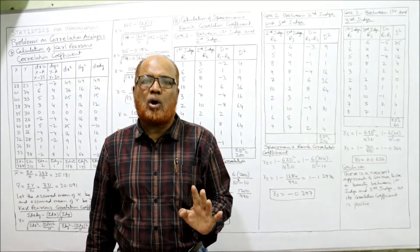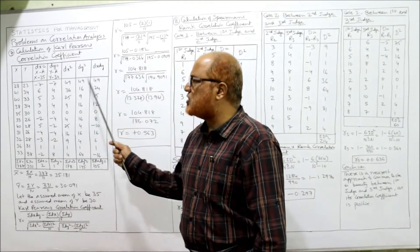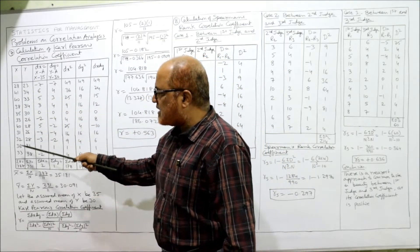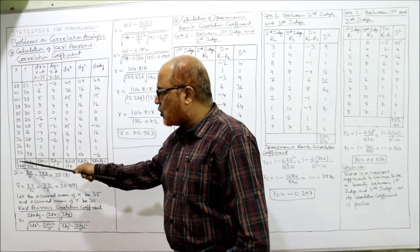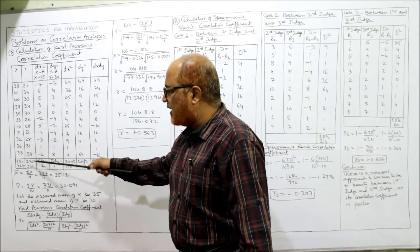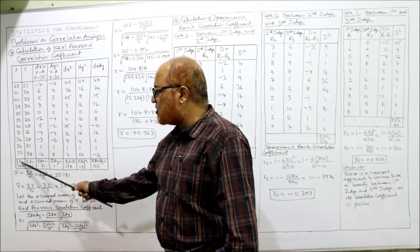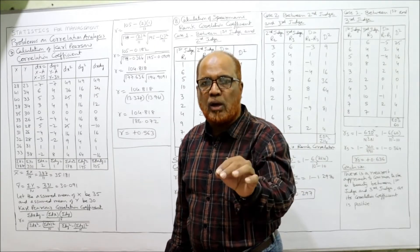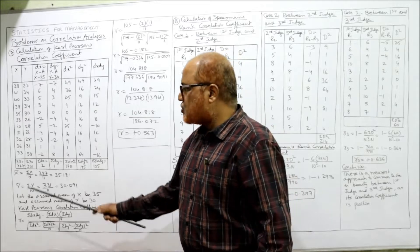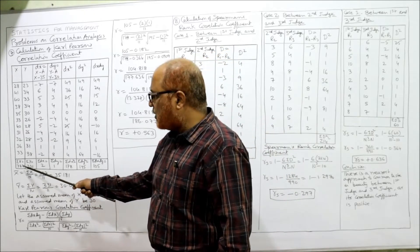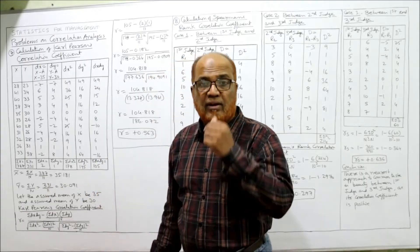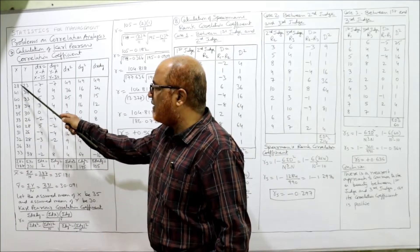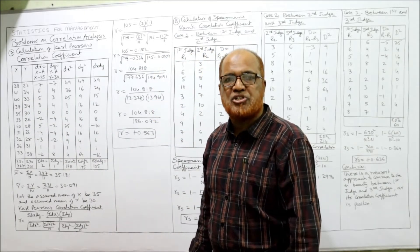First of all, draw two columns only — don't draw all the columns yet; leave sufficient space and we will draw the remaining columns later. First, the x column values are given, then the y column values. Take the total: summation x = 387, summation y = 331. After calculating these, check the number of items: 1, 2, 3 ... 11 — there are totally 11 observations.